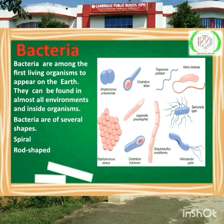The first one is bacteria. Bacteria are among the first living organisms to appear on the earth. They can be found in almost all environments and inside organisms. Bacteria are of several shapes like spiral, rod shaped. Bacteria har jagah paaya jaata hai.